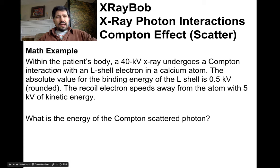Our next effect is the photoelectric effect. This is what makes our radiographic imaging possible — it gives us the contrast we want, the subject contrast. It occurs from energies of about 10 to 150 keV. What happens is the incident x-ray photon ejects an inner shell electron. The photon is completely absorbed, and the atom is now ionized. We ejected what is called a photoelectron.